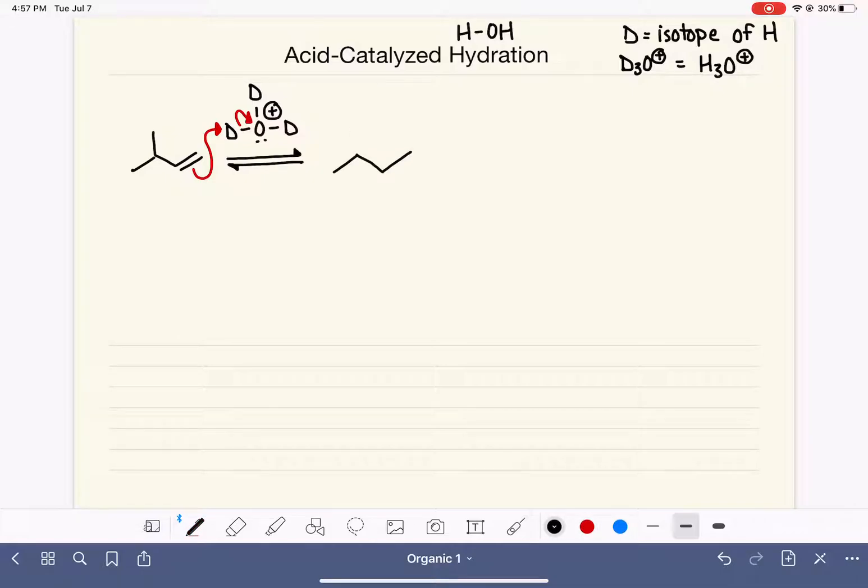And when that happens, we are going to get a product where we have converted the carbon-carbon double bond to a single bond, and this deuterium that we attacked with the double bond is going to be bonded to either one of these two carbons. This reaction is going to follow Markovnikov's rule, just like we would expect.